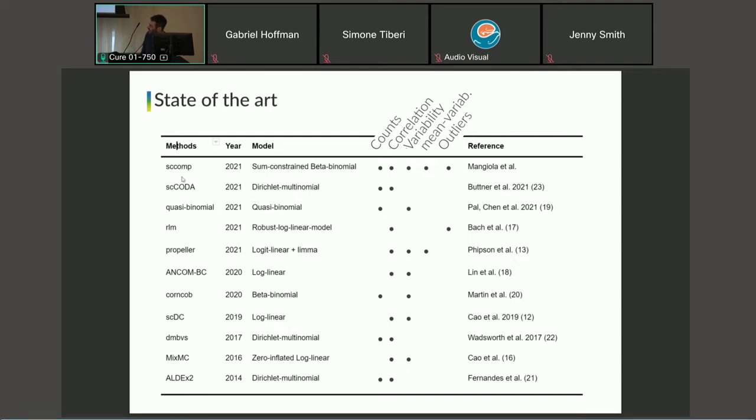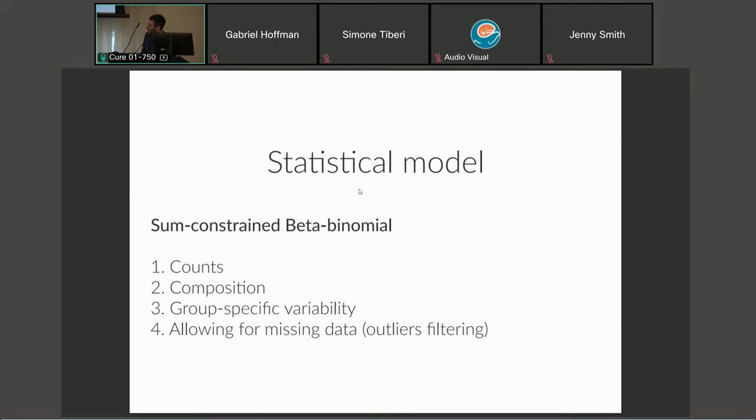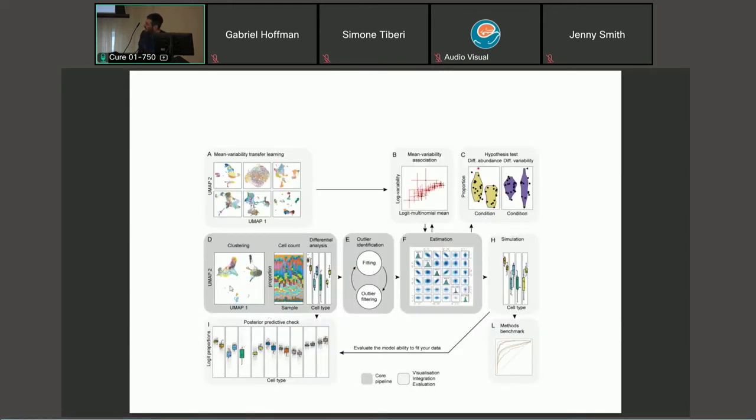That's why we developed this method that models all these properties jointly. I won't have time to go into the statistical model, but we use a sum-constrained beta binomial distribution. It's unique in that it can jointly model counts, compositionality, group-specific variability, and also allows for missing data. It's quite convenient if we want to remove outliers to do our estimation. This basic schematic is in our preprint, describing the core model here in the center.